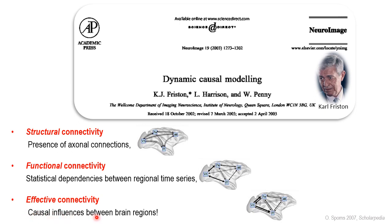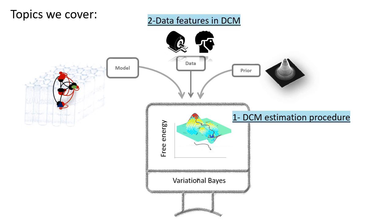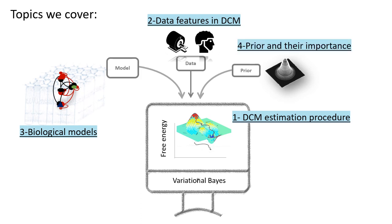In this lecture, we will provide a succinct introduction about the fundamental principles of DCM, covering four key topics. Firstly, we will explain the DCM estimation procedure, emphasizing the significance of model evidence for translational neuroscience. Next, we will unpack the assumptions of DCM about underlying generators of neuroimaging data features. Moving to the third part, we will navigate through the intricacies of biological models. And in section four, we will discuss priors and their importance in DCM. After giving an illustrative example, we will explain multimodal DCM.